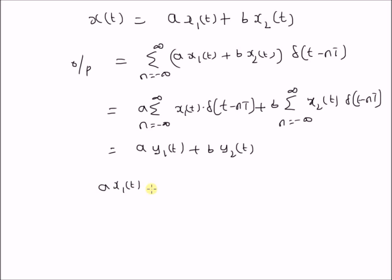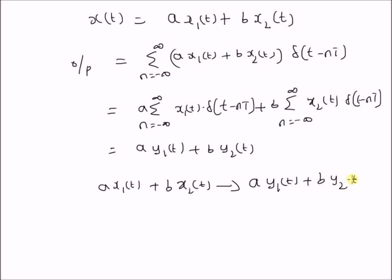That is, the linear combination a·x1(t) plus b·x2(t) results in an output a·y1(t) plus b·y2(t), where y1(t) is the corresponding output for x1(t). Therefore, the system in equation 1 is a linear system.